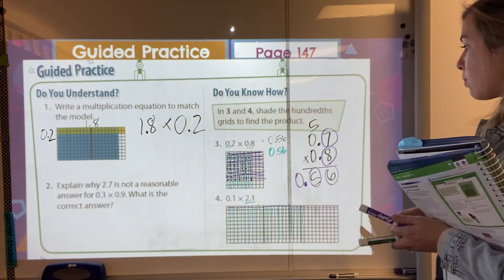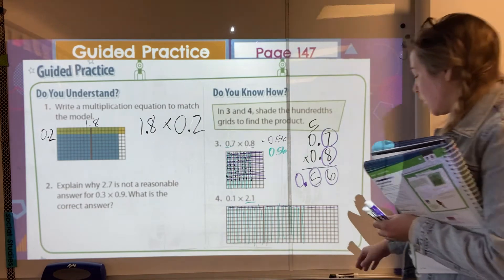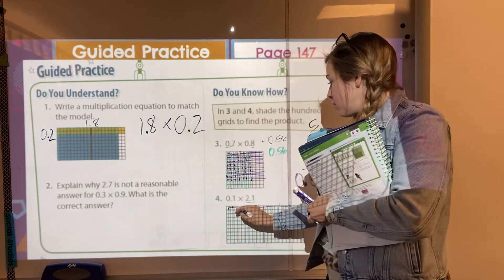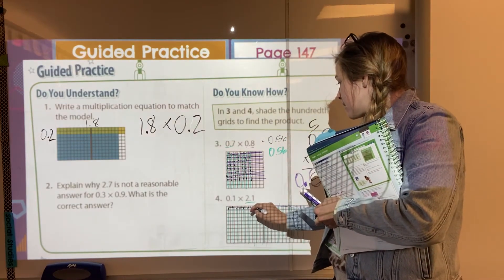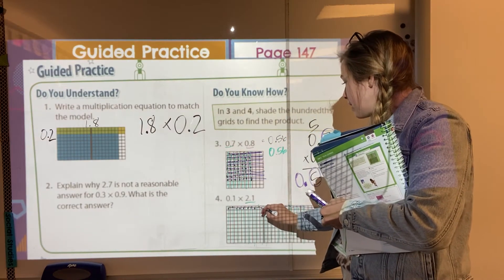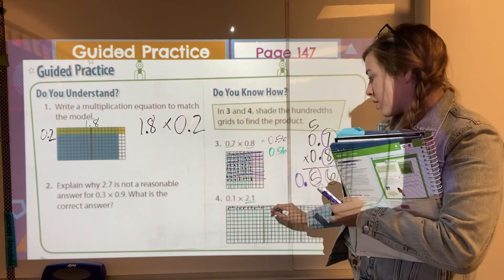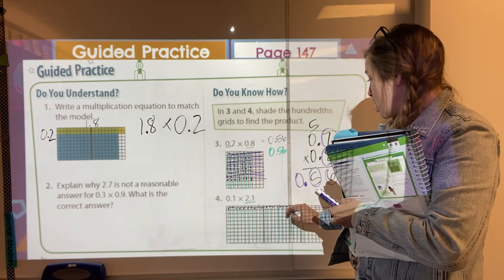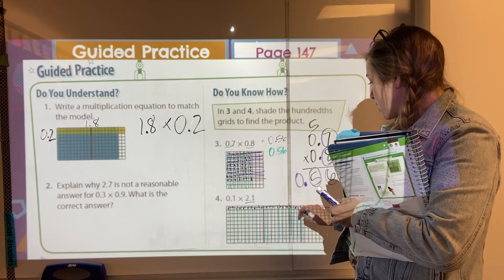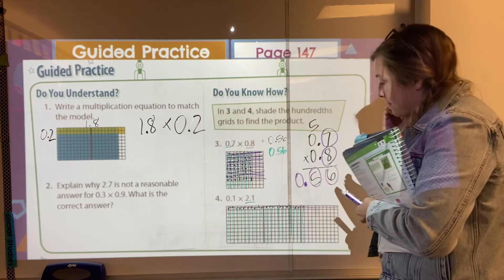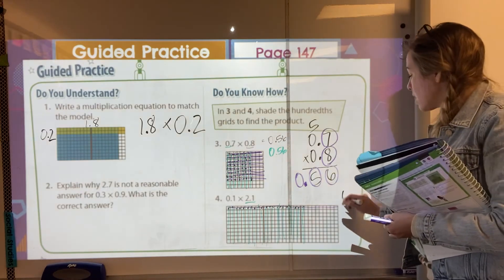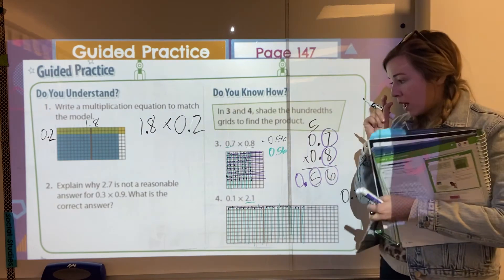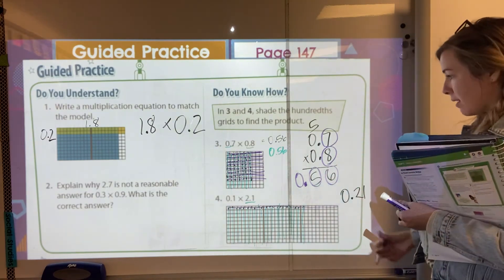So then what I can do is count up how many little overlappies I have to see what my answer will be. So we have one, two, three, four, five, six, seven, eight, nine, ten. And then, you know, you're going to have another 10, 11, 12, 13, 14, 15, 16, 17, 18, 19, 20, and then 21. So we have 21 hundredths because remember the one little cube is worth a hundredth and I have 21 of them.